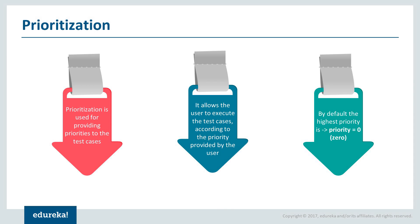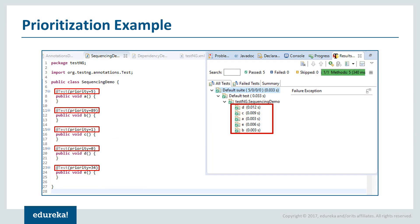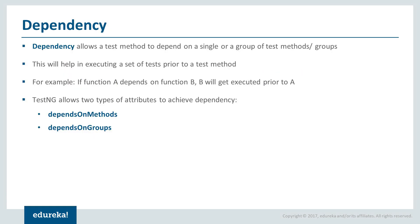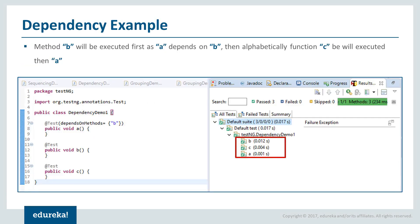If one test case is depending on another test case, we create a dependency and make this method wait until the dependent method gets executed properly. We'll see something called dependsOnMethods. For example, say if you have a login operation...